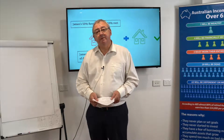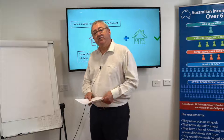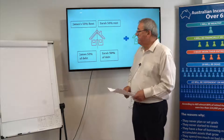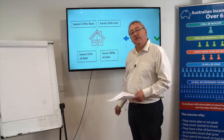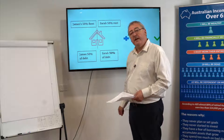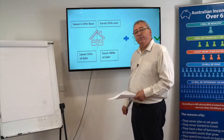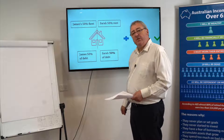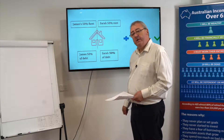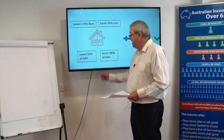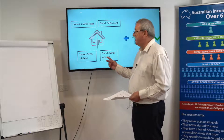We found a lender that had a product called a common debt reducer. We had to demonstrate that James could meet his obligations to the investment lending, and this would mean that a lender would find Sarah suitable for an additional home loan if she could service the home loan and her 50% of the lending.